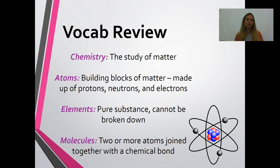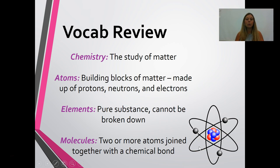Atoms are the building blocks of matter, and matter is anything that takes up space or has mass. Atoms are made up of protons, neutrons, and electrons. Protons and neutrons are found in the nucleus. Electrons orbit around the nucleus. Protons are positively charged, neutrons have no charge, and electrons are negatively charged.